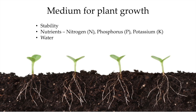In particular, soil provides three main macronutrients: nitrogen, phosphorus, and potassium — NPK — which are essential for plant growth. And it's providing water. Because soil has pore spaces, it can hold onto water for longer periods of time. Even if we haven't had rain for a couple of days, water can be stored in soil, giving a constant supply of water to the plant.